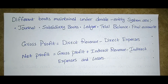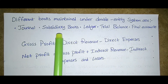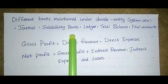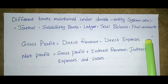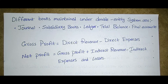Different books maintained under the double entry system are: first, the journal; second, subsidiary books; third, the ledger; trial balance; and final accounts.